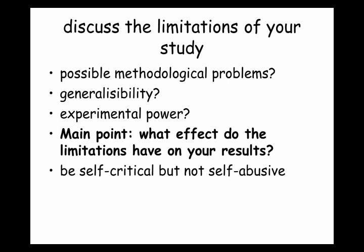What about generalizability? That's the thing about internal and external validity. You need to explain both — why your experiment had internal validity, so it was a good experiment, and why it had external validity, so how it generalizes to the general population. Here you can talk about the experimental power, saying that you needed more people to find a significant effect. But not only criticize your experiment — not be self-critical, but not self-abusive, because what I want to know is what effect these limitations had on your results. I want to know that you can think. If you say 'the sun was shining and that had an effect on our results,' I don't believe you — you need to justify that. Always justify why that was a bad thing.